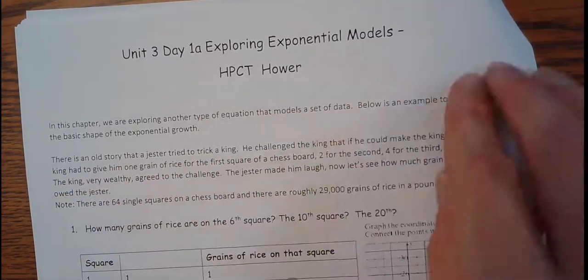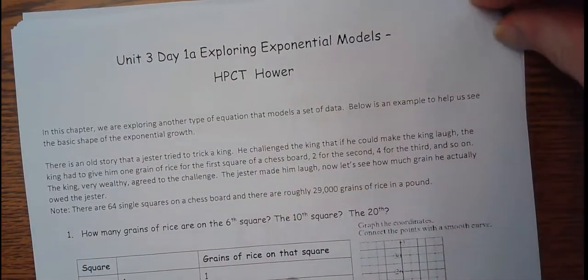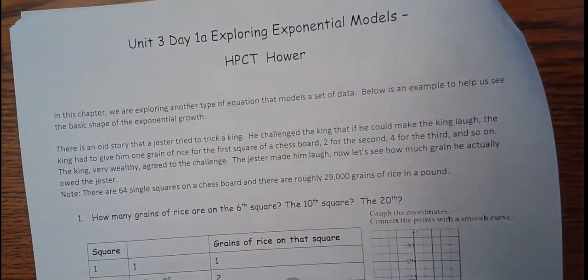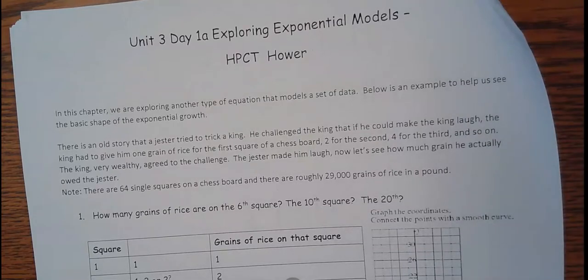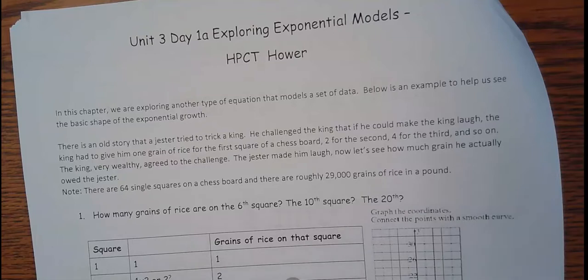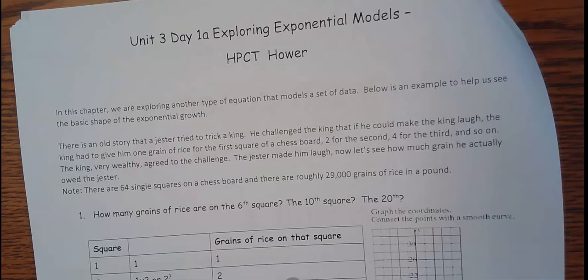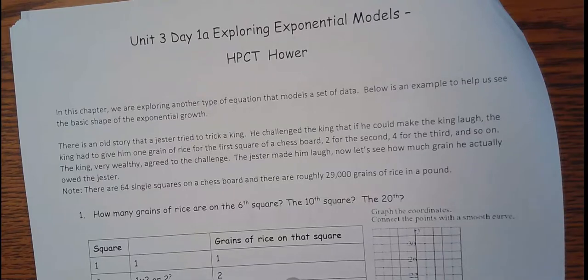This is an old story I heard once. Supposedly it's true, I highly doubt it's true, but supposedly it's true. There's an old story that a jester tried to trick a king. He challenged the king that if he could make the king laugh, the king had to give him one grain of rice for the first square of a chessboard, two for the second, four grains of rice on the third, and so on. The king, being very wealthy, agreed to the challenge. And so the jester made him laugh.